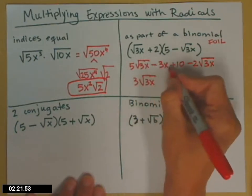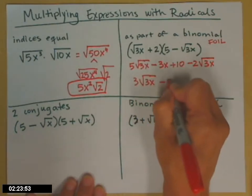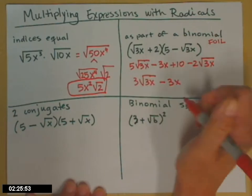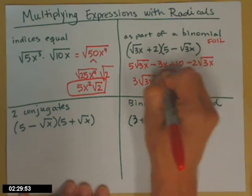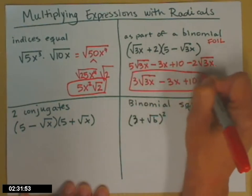This minus 3x that doesn't have a radical, that just stays. It is not like that one. This one has a radical. This one doesn't. And then plus 10. No more simplifying to be done.